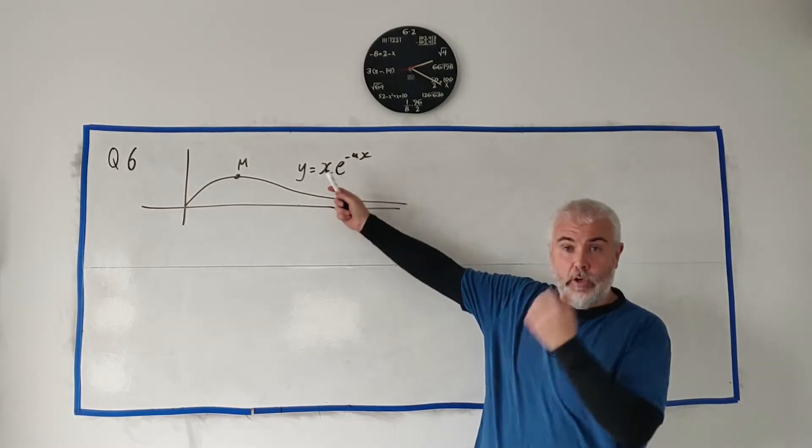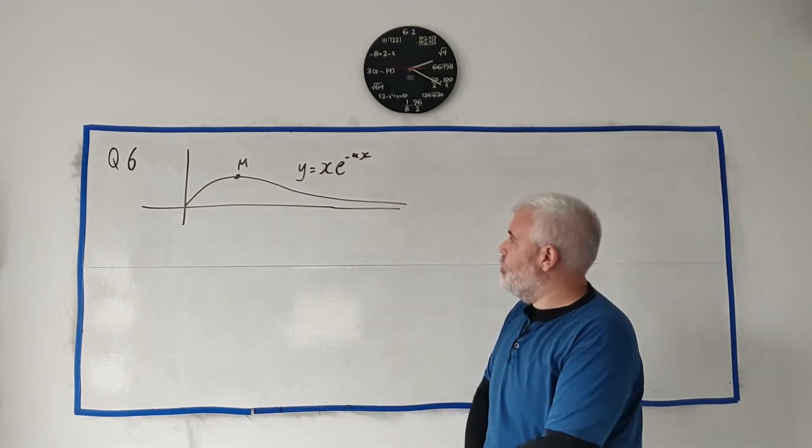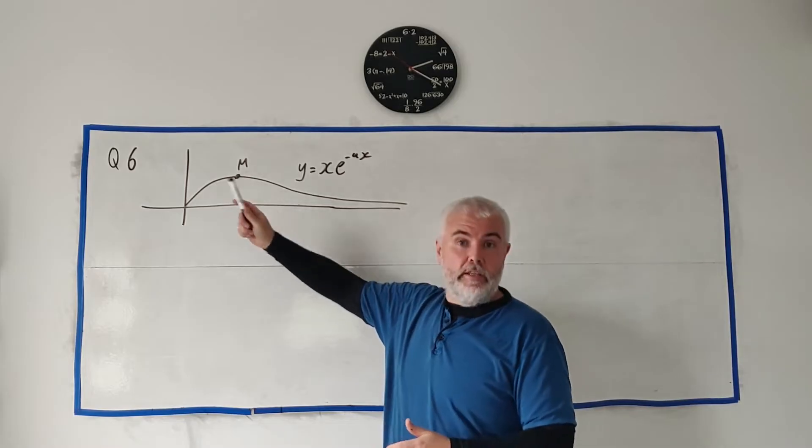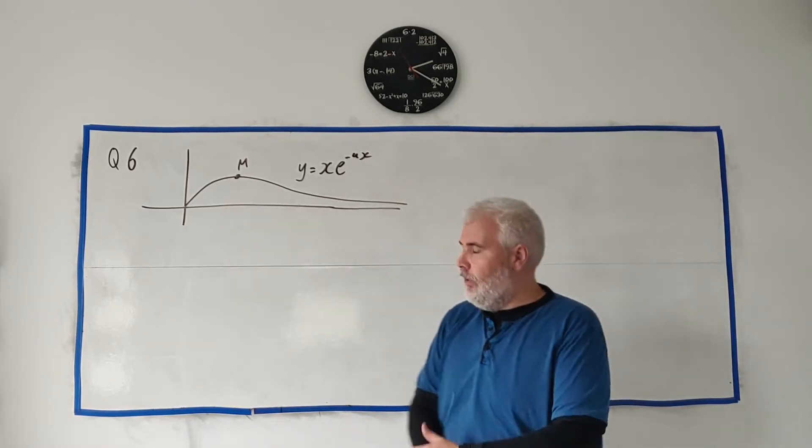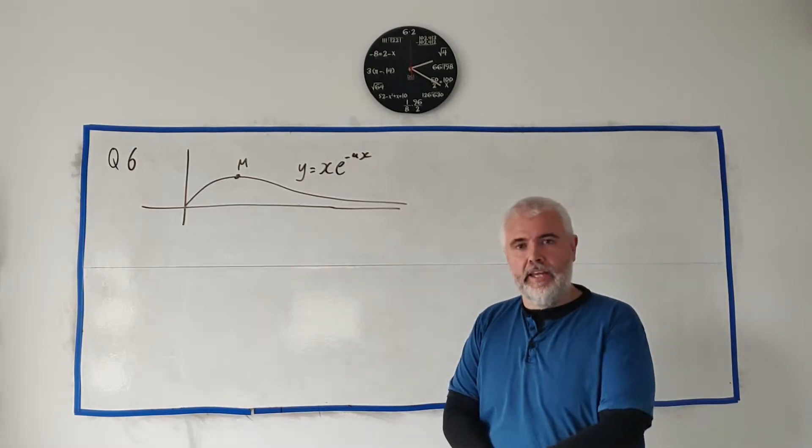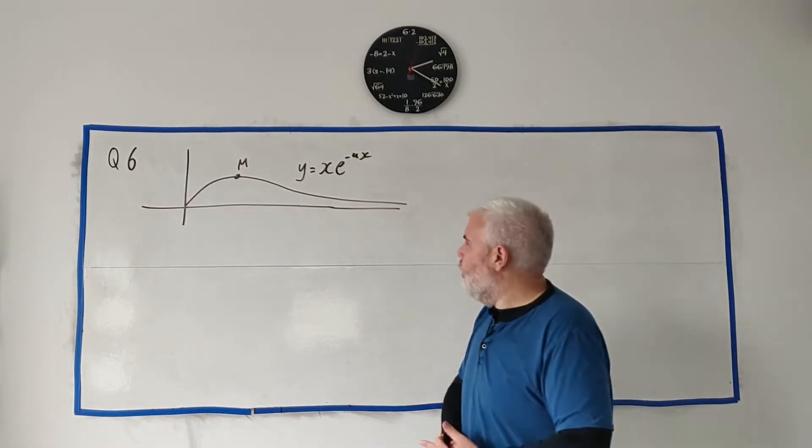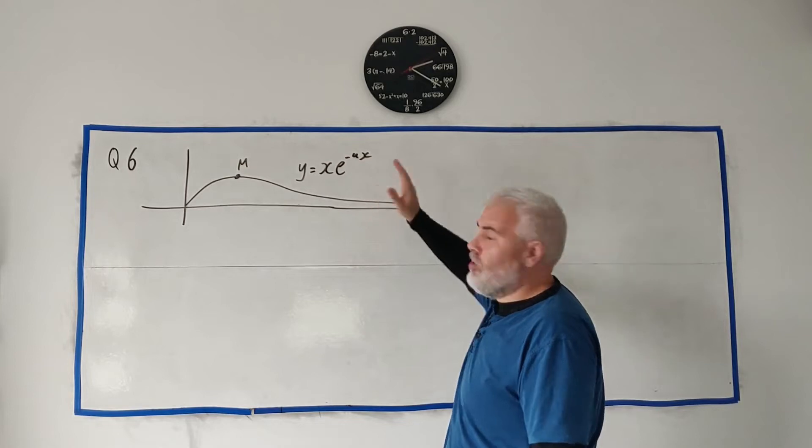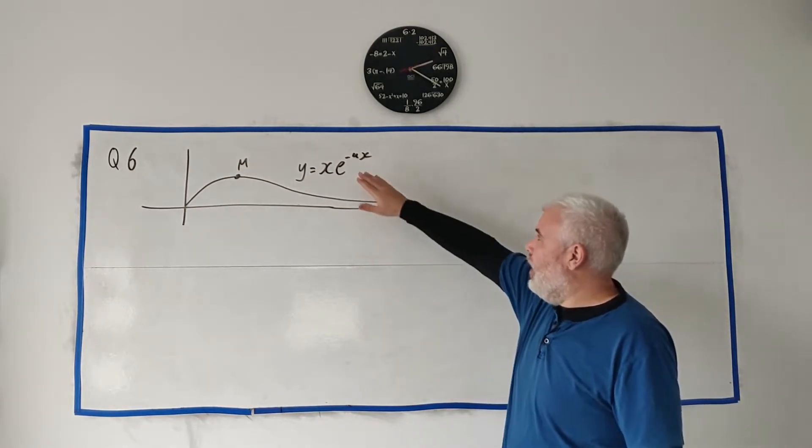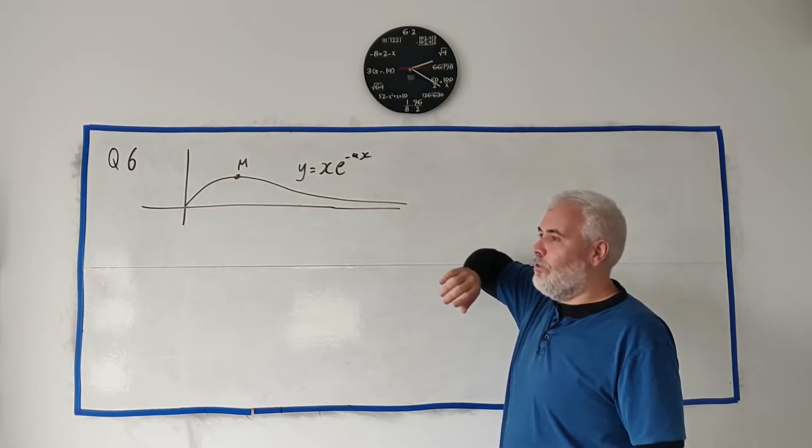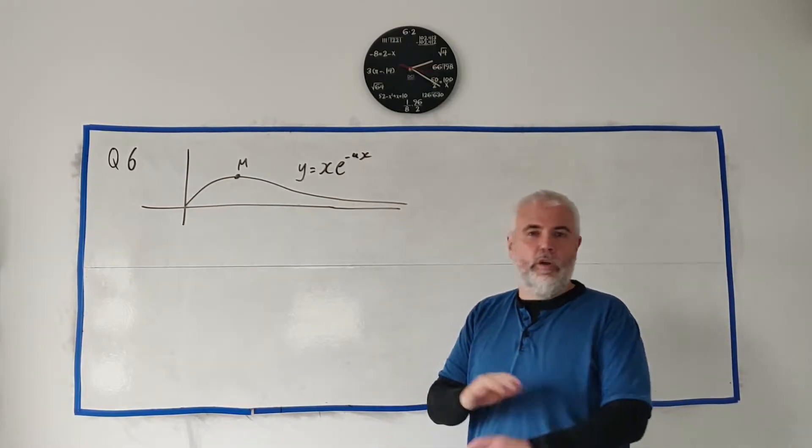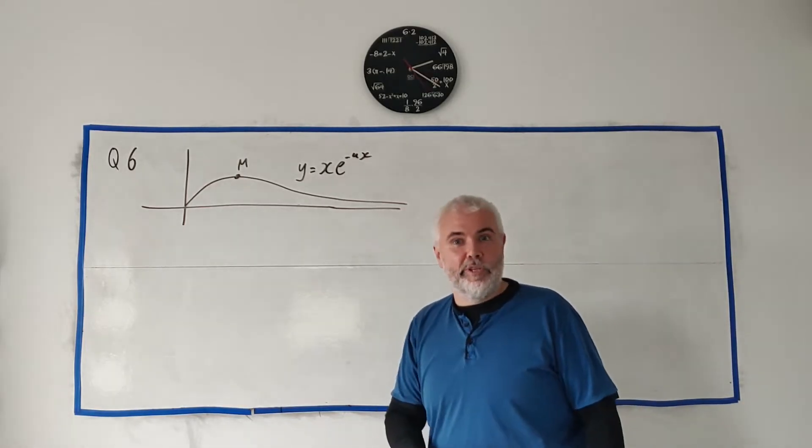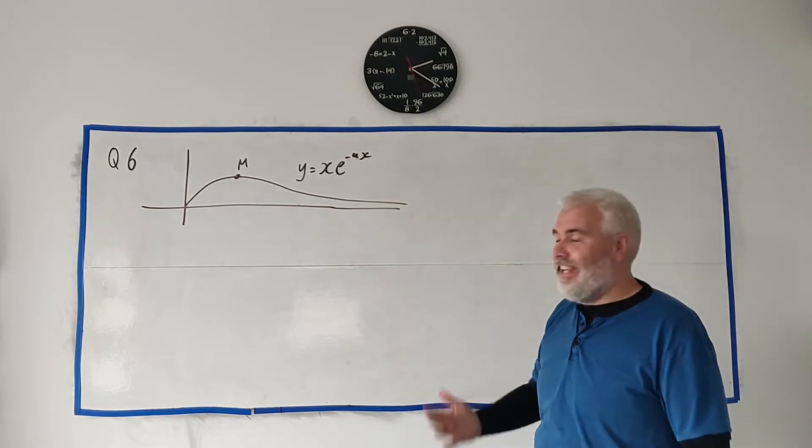Question 6 gives us this equation y = xe^(-ax) and draws us the image of the function. In part A, they ask us to find the coordinates of M, the maximum point on this. So we're going to differentiate in part A and in part B we're going to integrate. One thing that's going to be hard is they're never going to give us A, we're always going to have to deal with A. The harder maths gets, the less numbers we use, the more letters. You're going to get a taste for that here.